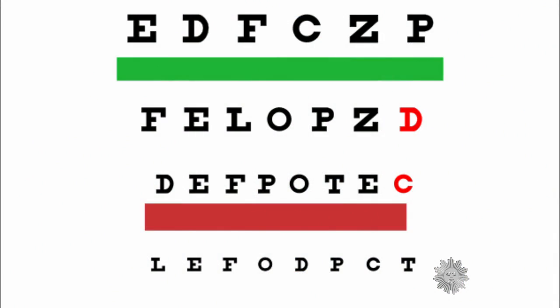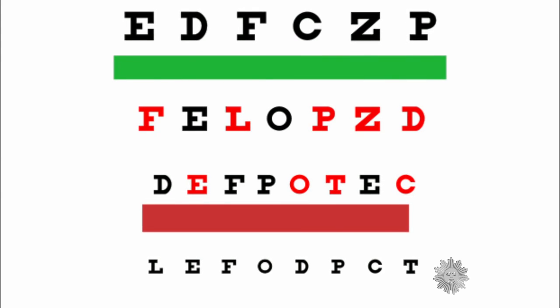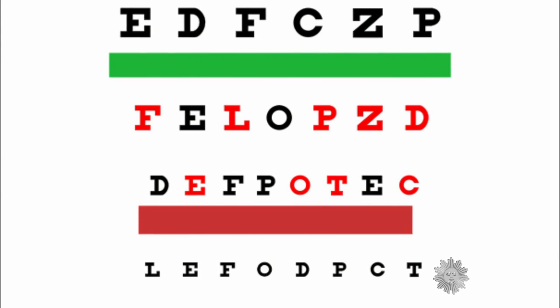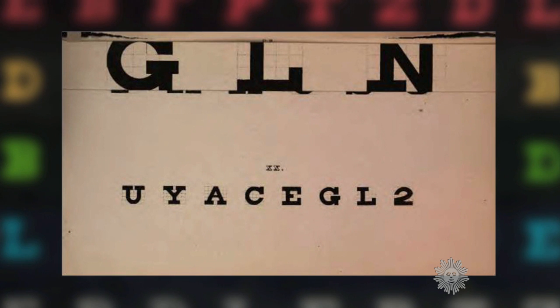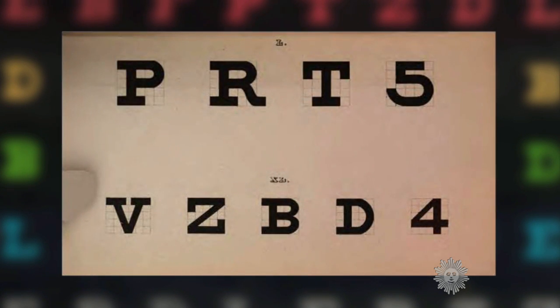C, D, E, F, L, O, P, T, and Z. Their somewhat clunky appearance and their spacing were all carefully designed by Snellen to test visual acuity.